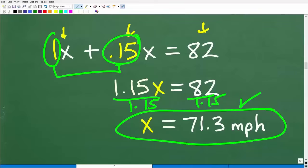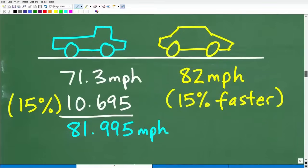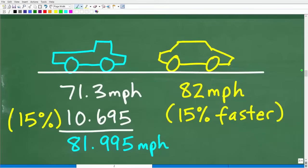So let's go ahead and put this answer through the check and just make sure it is correct. So here is our truck. Now, if the truck is going 71.3 miles per hour and the car is going 15% faster than the truck, and of course, we know the car speed is 82 miles per hour, let's go ahead and see if this, in fact, is true.